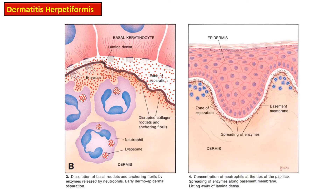Neutrophils present at the dermoepidermal junction release various lysosomal enzymes and proteases. These proteases then spread along the dermoepidermal junction, and the spread of these enzymes results in separation of the dermis and the epidermis and lifting away of the lamina densa.